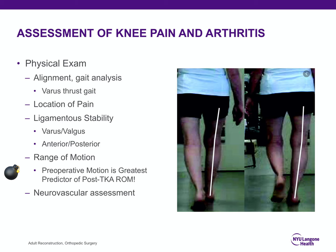On physical exam, assess standing knee alignment and gait with specific attention to varus thrust — where patients with medial knee OA have stretched lateral ligaments and go into a varus posture during stance phase. Location of pain is extremely important in question stems, as is ligamentous stability including varus/valgus and AP sufficiency. The most common test question: the biggest predictor of post-TKA range of motion is preoperative range of motion. Always complete a neurovascular exam.